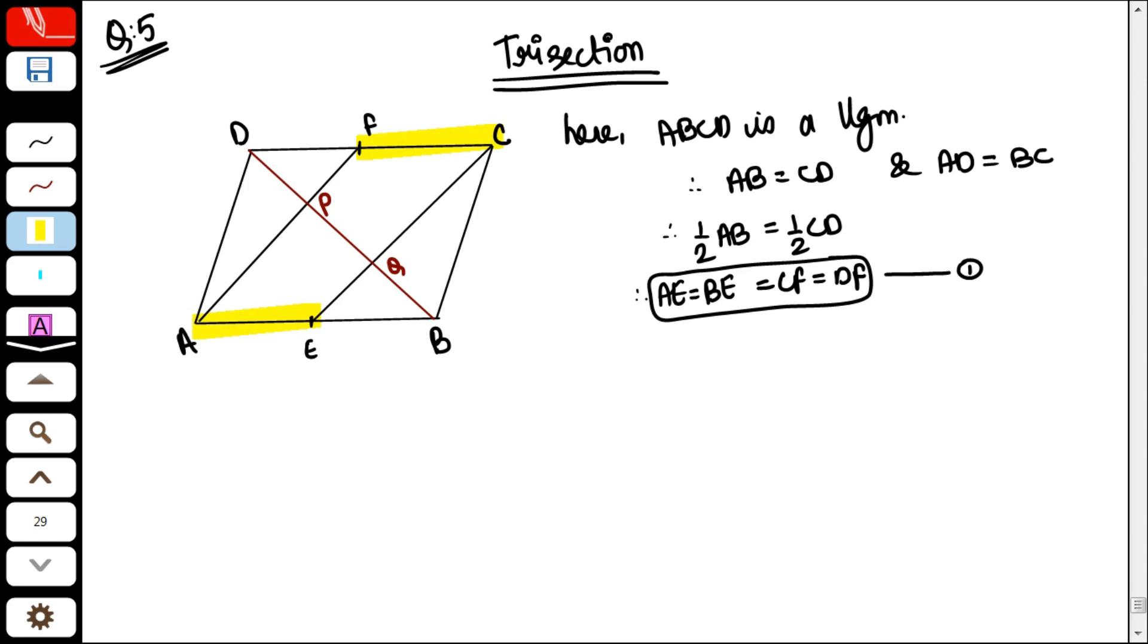Lines are parallel and lines are equal. What does the shape become? So AECF, what has it become? AECF, what has it become? A parallelogram has formed. So its other two sides will also be parallel and equal.